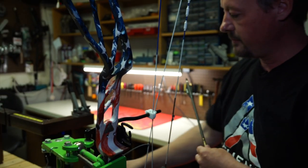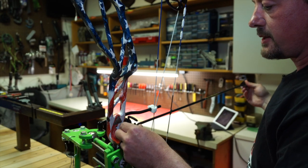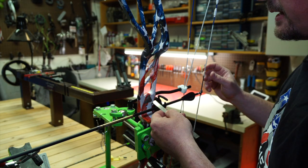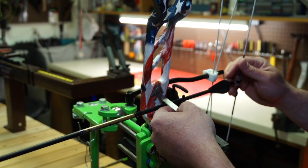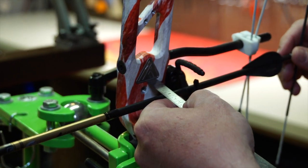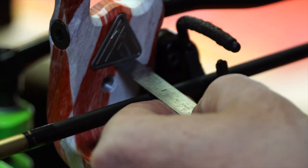Now for the next step, setting the left and right center shot. For your initial settings on our bow, I really like these metal rulers. Your initial settings should be somewhere around 7/8ths to 15/16ths.